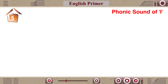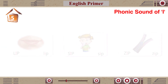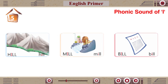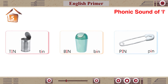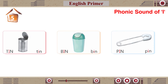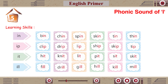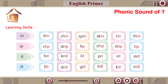Chapter 5: Phonic Sound of I. Lip, Zip, Hill, Mill, Bill, Tin, Bin, Pin. Learning Skills: In, If, It, Ill, Bin, Chin, Pin, Skin, Thin, Clip, Drip, Lip, Ship, Skip, Tip, Hit, Knit, Lit, Pit, Fill, Drill, Gill, Hill, Kill, Mill.